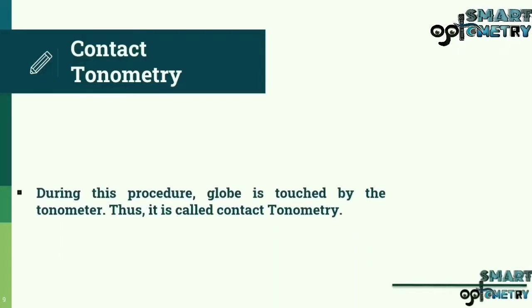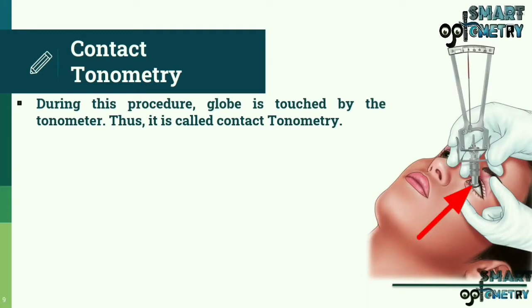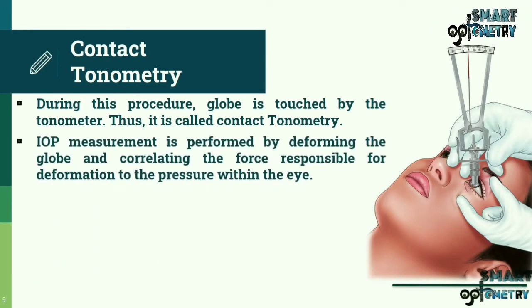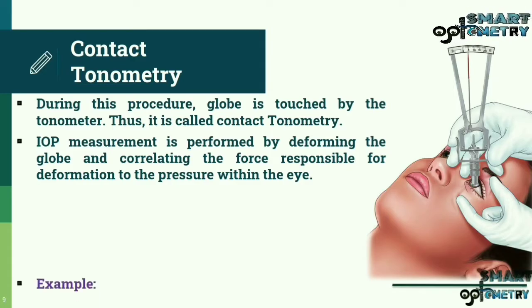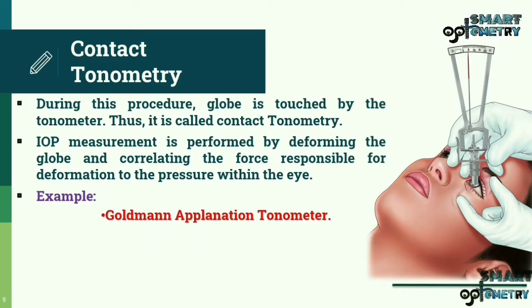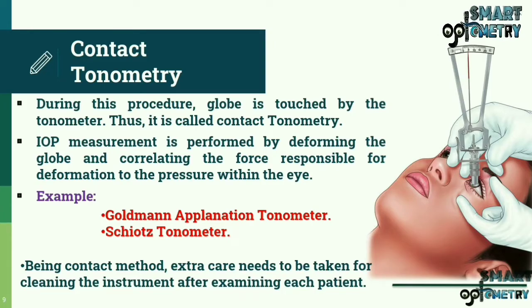Contact tonometry: during this procedure, the globe is touched by the tonometer, hence the name contact tonometry. IOP measurement is performed by deforming the globe and correlating the force responsible for deformation to the pressure within the eye. Examples include the Goldman Applanation Tonometer and the Schiotz tonometer. Being a contact method, extra care must be taken to clean the instrument after examining each patient.